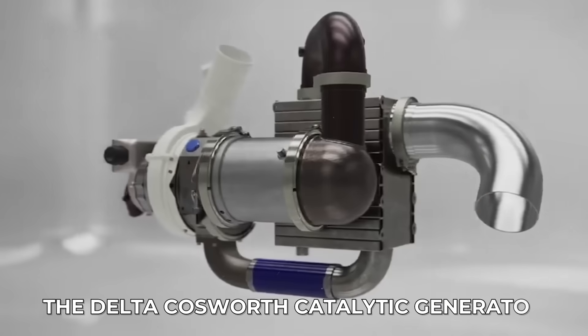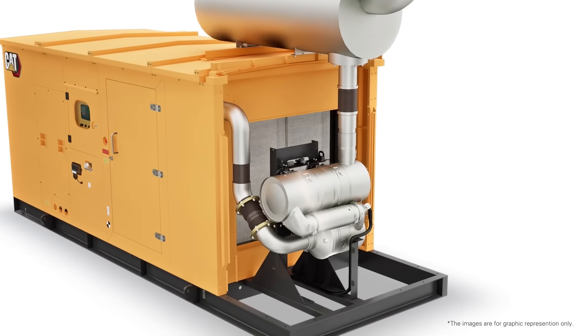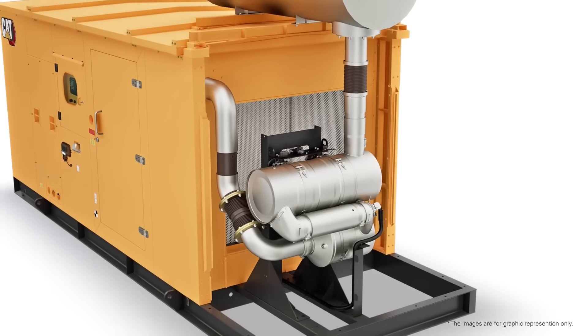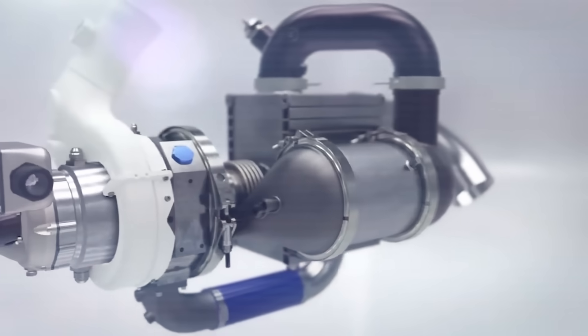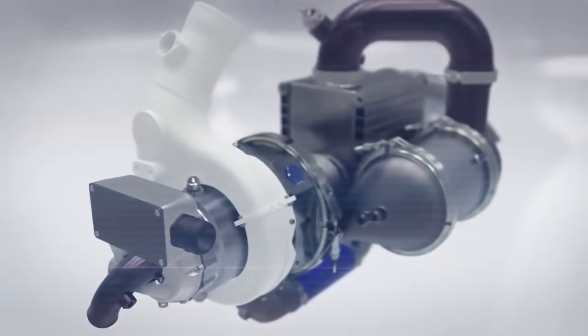The Delta Cosworth catalytic generator, the CAT-Gen, is presented as a compact and highly efficient power unit designed to support cleaner electrification in many different industries.